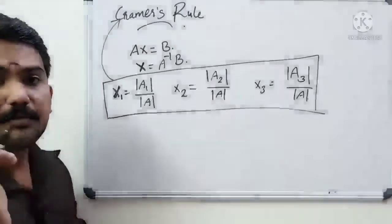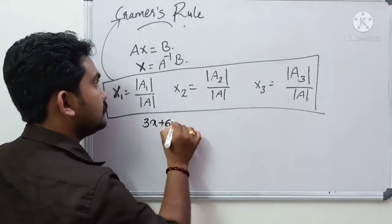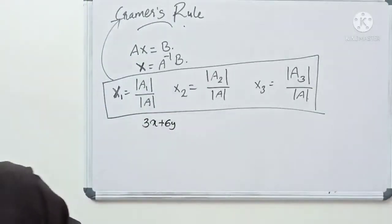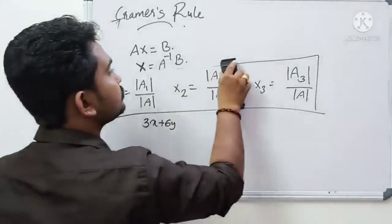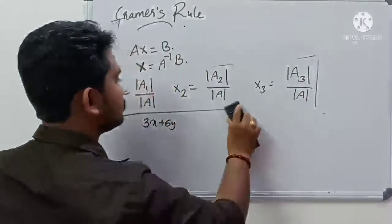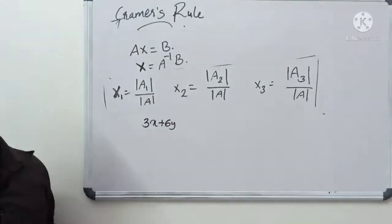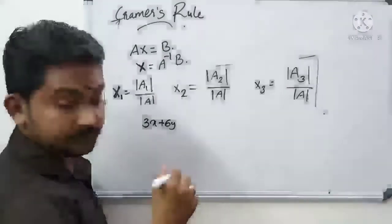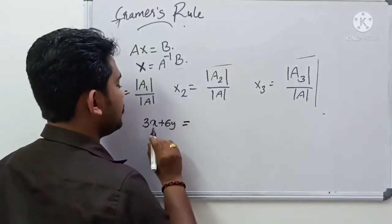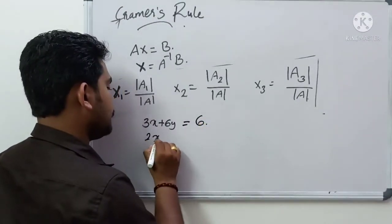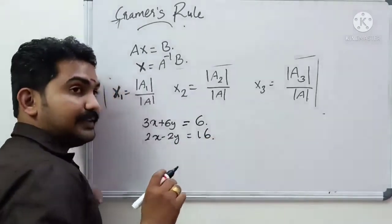We will learn how to work with a 3x plus 6. Let's check it out. We have: 3x plus 6y is equal to 6, and 2x minus 2y is equal to 60.